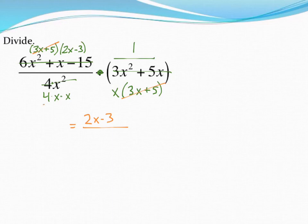In the bottom, I've got 4 times x times x times another x. So altogether, I've got 4x to the third.